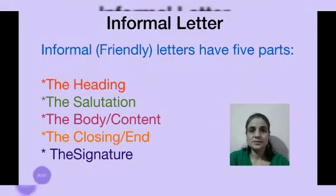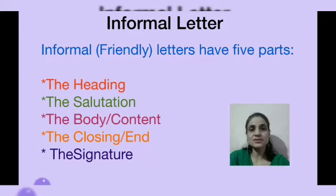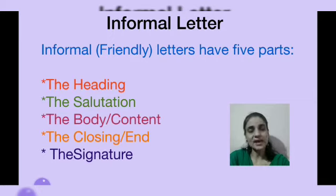So let's start. Informal letters, or friendly letters, have five main parts. Number one, the heading. Next, the salutation. Next, the body or content. The closing or end. And the last, the signature.